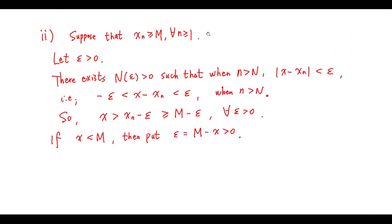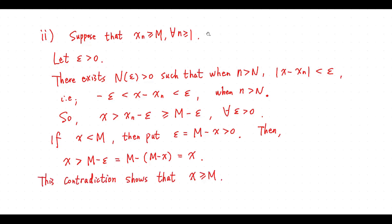If x is less than M, then we put epsilon equals M minus x. Then we get x is greater than x, a contradiction. This contradiction shows x is greater than or equal to M.